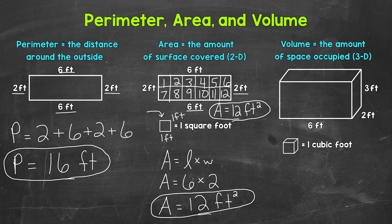And that's it for area. Just remember, area is the amount of surface something covers. Now, something to keep in mind: we find area of different shapes and figures different ways — there are different formulas. We used length times width because we had a rectangle for our example.